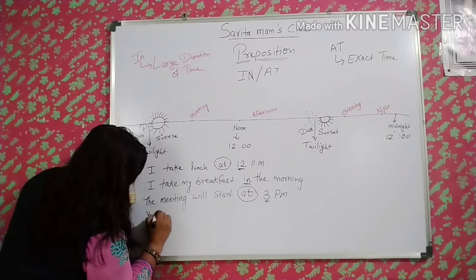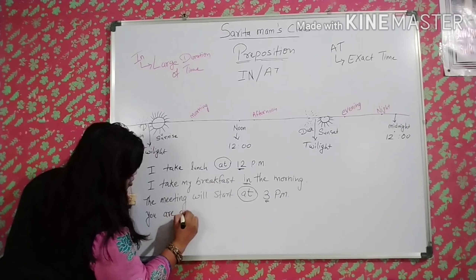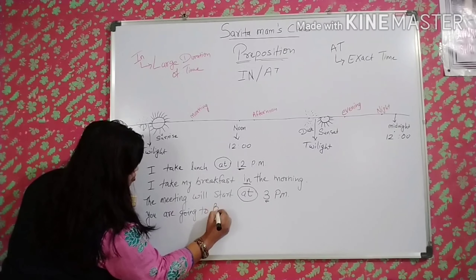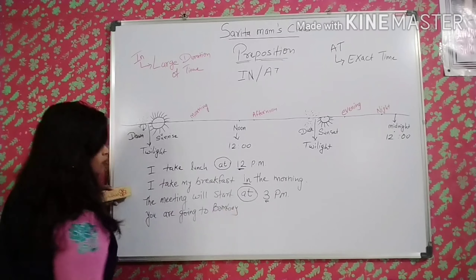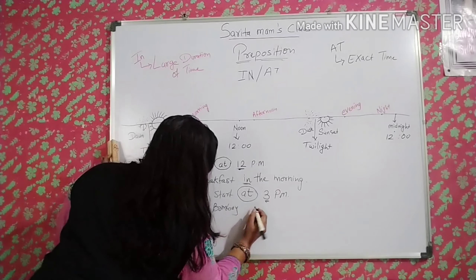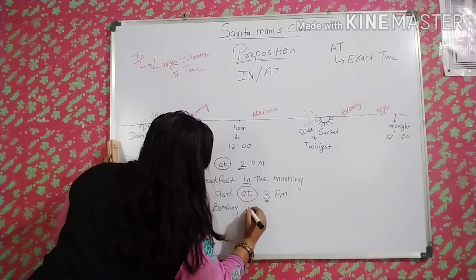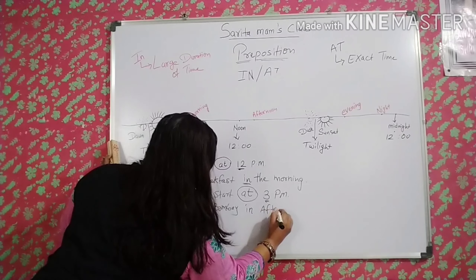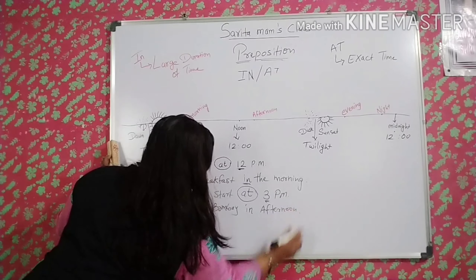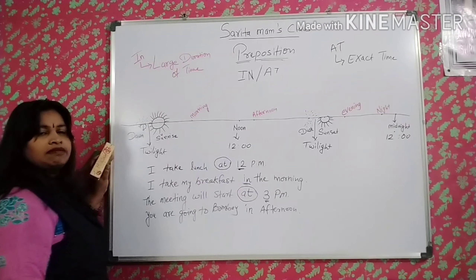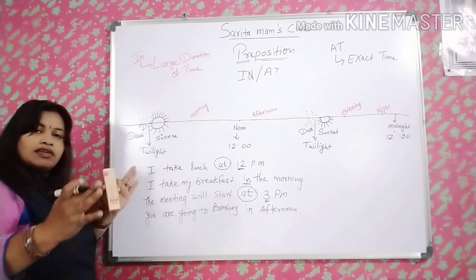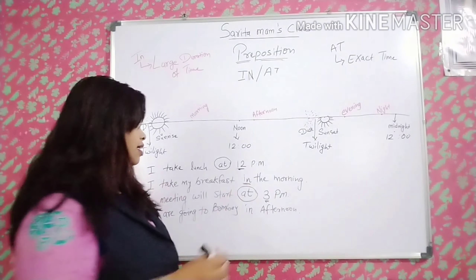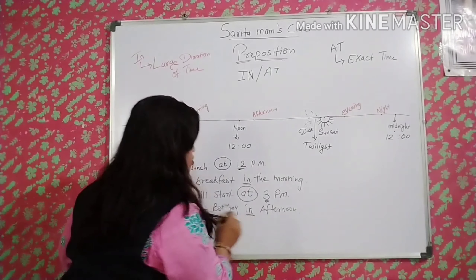Another example: 'You are going to Bombay in the afternoon.' Afternoon shows a larger duration of time, so we use 'in'. So you can see how 'in' and 'at' work: we use 'in' for longer time durations like morning, afternoon, and evening, and we use 'at' for exact times like 12 p.m. or 3 p.m.